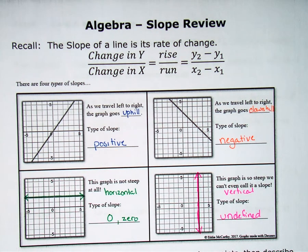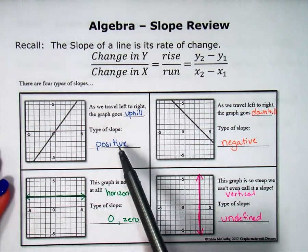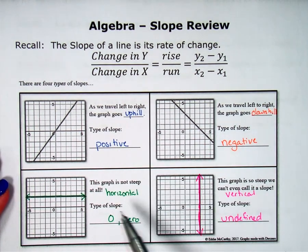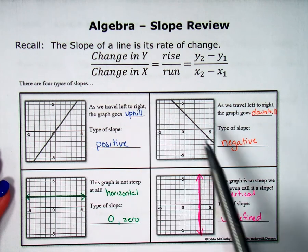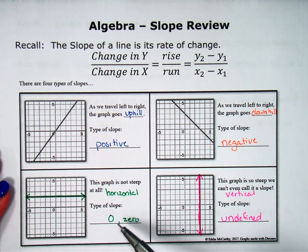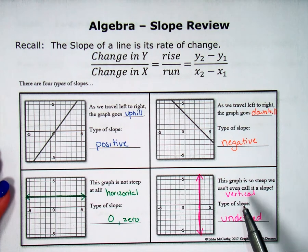Welcome back. In the last video, we reviewed some slope information where we talked about slopes can be positive, negative, zero, or undefined. When you graph a positive slope, it's uphill. Negative is downhill. A zero slope is horizontal, and an undefined or no slope is vertical.